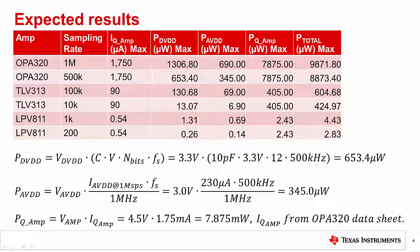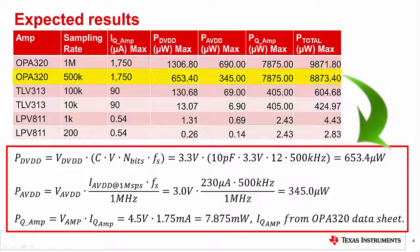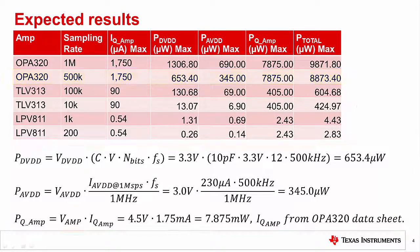The table shows the calculated maximum power for all the different test configurations that we will measure. The example calculation shown is for the OPA320 500 kS/s case. These calculations were covered in detail in the Precision Labs lecture on power scaling. First, we calculate the digital communications power, denoted P_dvdd.